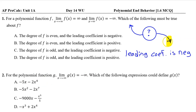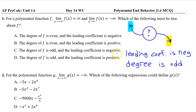Remember that the end behavior on the right matches the sign of the leading coefficient. Because the polynomial approaches negative infinity on the right, the leading coefficient is negative. Also, the fact that we have opposite end behaviors on the left and right tells us that the degree is odd. So the answer is C.